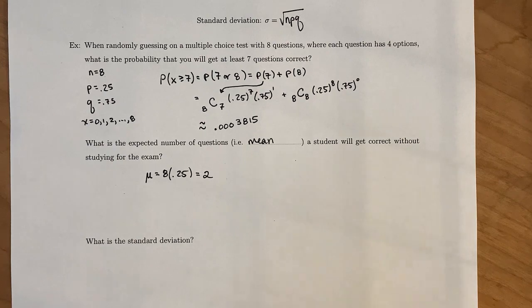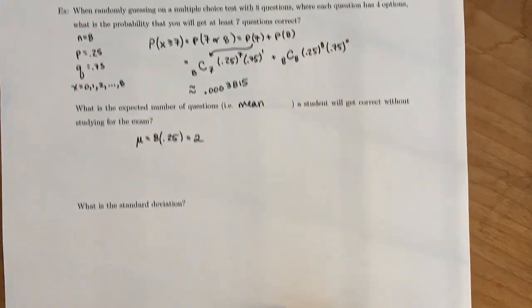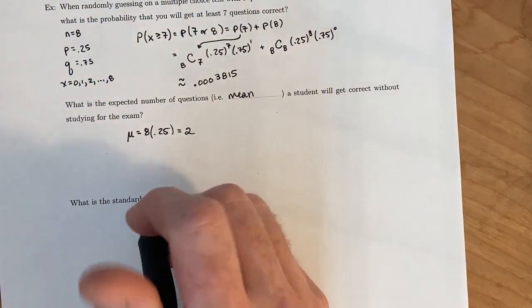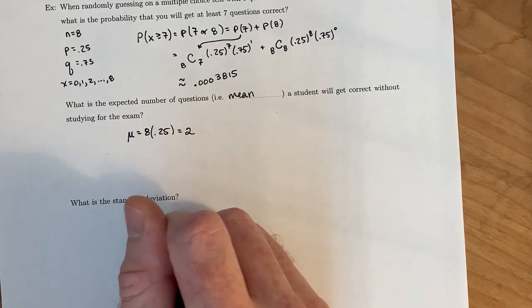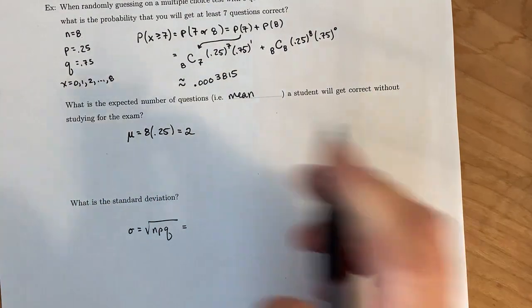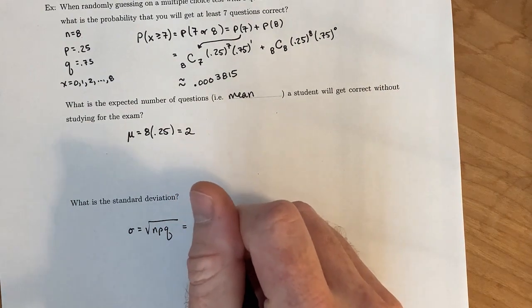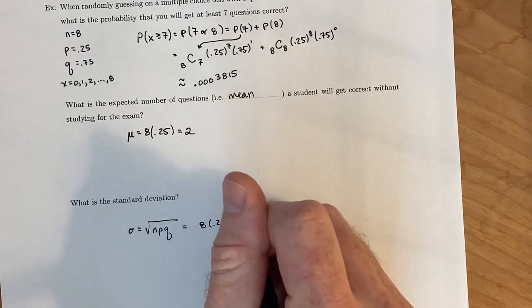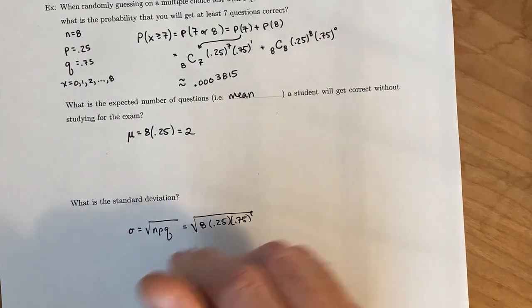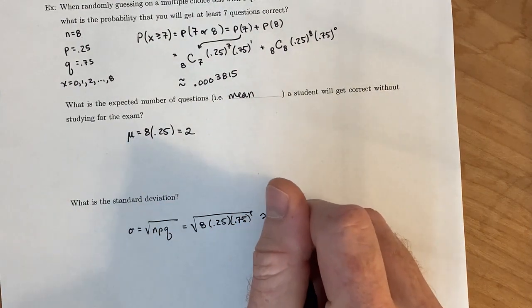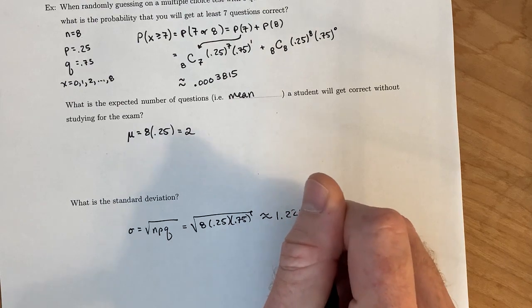And then, we want to figure out what the standard deviation is. And our formula up here says that standard deviation is the square root of N times P times Q. And so, our N, again, was 8. Our P was 0.25. And our Q was 0.75. And if you run that through a calculator, you get 1.2247.